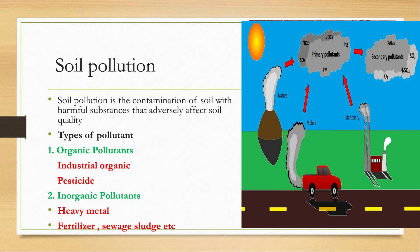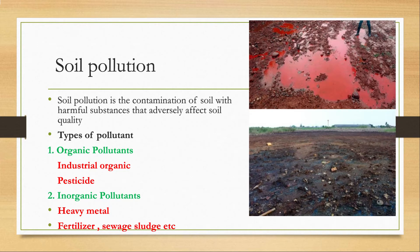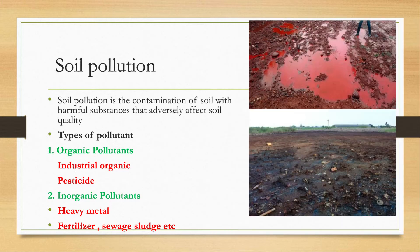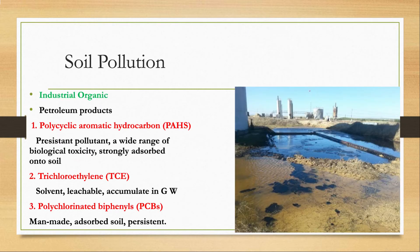In soil, two types of pollutants can be found. Organic pollutants are further divided into industrial organic pollutants and pesticide organic pollutants. Inorganic pollutants include heavy metals, whose sources are fertilizers, sewage sludge, etc. These are the types of pollutants that cause soil pollution.